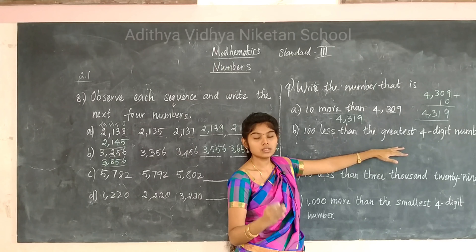We have worked out all the problems from exercise 2.1. Complete all the assignment problems given. In the next class we are going to see the new topic: place values and face values of 4-digit numbers. Thank you, students.